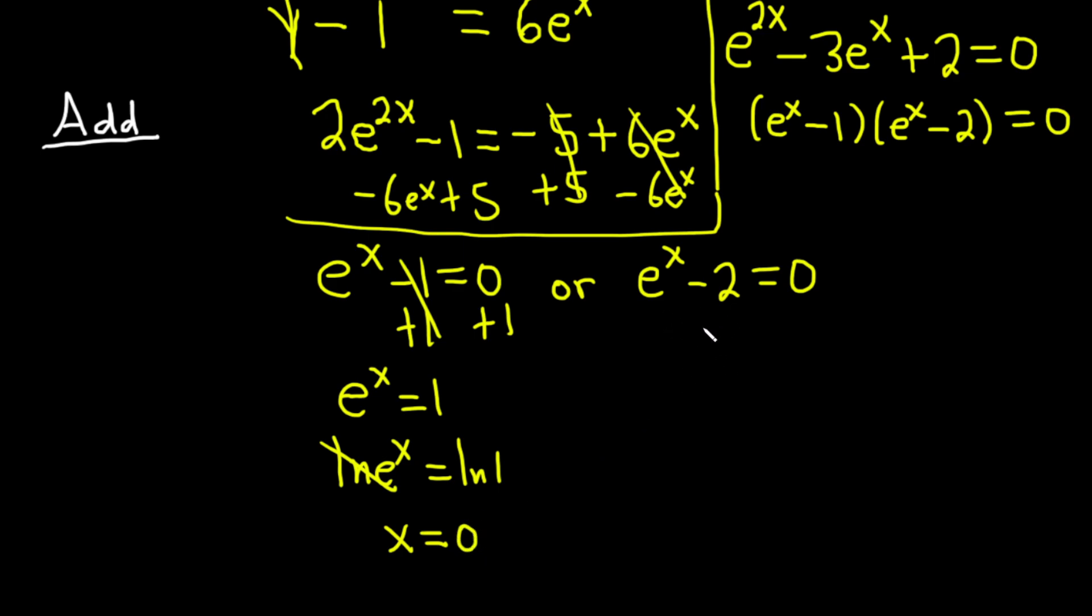Over here, same thing, we add the 2 to both sides. So plus 2, plus 2. So we have e to the x equals 2. And then again, just take the natural log of both sides. ln e to the x equals ln 2. These cancel, so you get x equals ln 2.